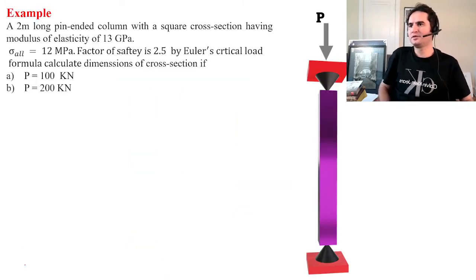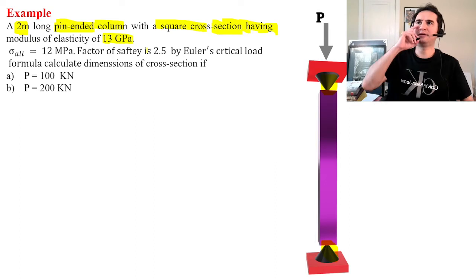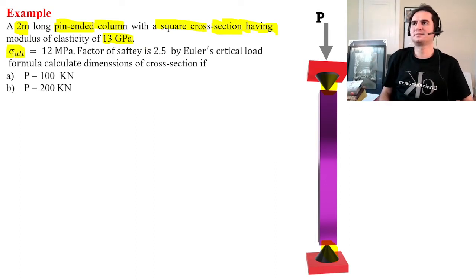In this example we want to study a 2-pin supported column with a 2 meter long length, with a square cross-sectional area having a modulus of elasticity of 13 gigapascals.